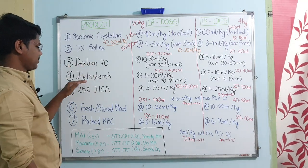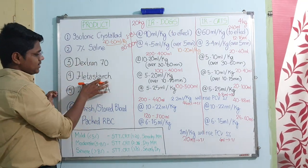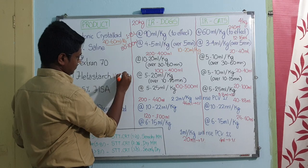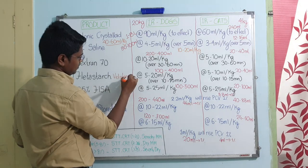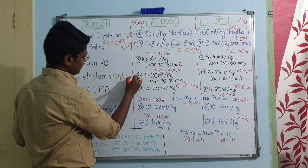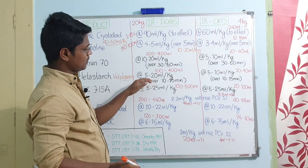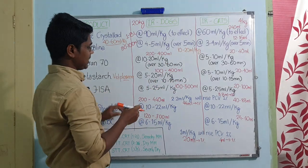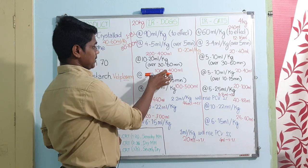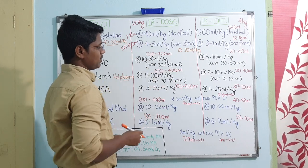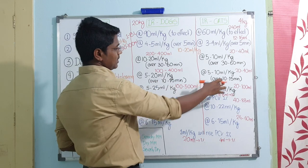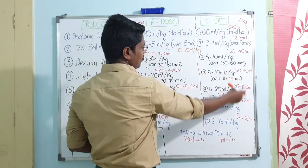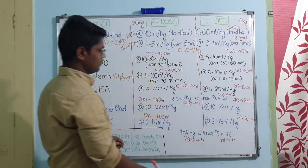Hetastarch - actually it is hydroxyethyl starch, commonly available in market as VetPlasma. The dose rate is 5 to 20 ml per kg body weight, usually given more rapidly than Dextran - that is 10 to 15 minutes. For a 20 kg dog, give 100 to 400 ml over 10 to 15 minutes. In cats, dose rate is 5 to 10 ml per kg; for a 4 kg cat, 20 to 40 ml over 10 to 15 minutes.